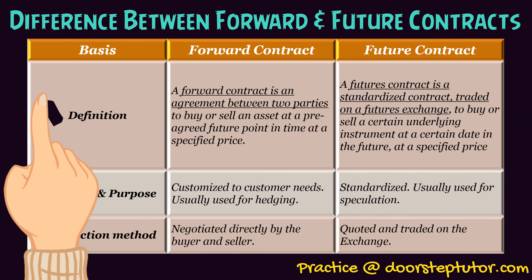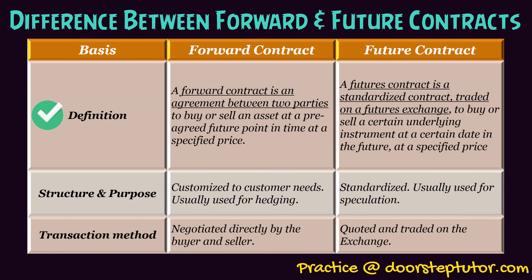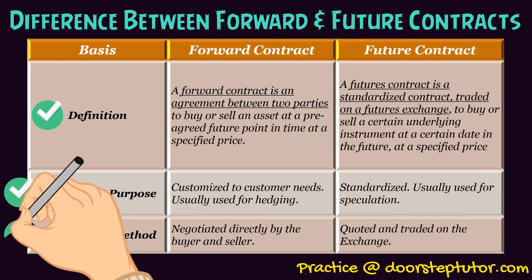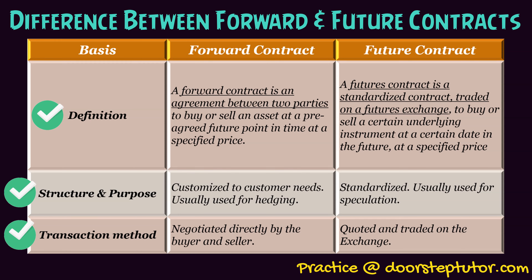Now let's look at the differences between forward and futures contracts. First, definition: a forward contract is an agreement between two parties to buy or sell an asset at a pre-agreed future point in time at a specified price, whereas a futures contract is a standardized contract traded on a futures exchange to buy or sell a certain underlying instrument at a certain date in the future at a specified price. Next, structure and purpose: forward contracts are customized according to customer needs and usually used for hedging, whereas futures contracts are standardized and usually used for speculation. Next, transaction method: forward contracts are negotiated directly by the buyer and seller, whereas futures contracts are quoted and traded on the exchange.